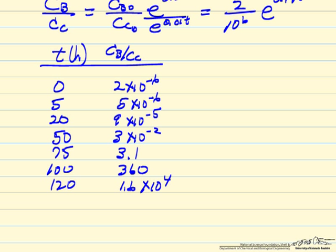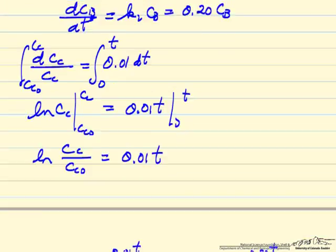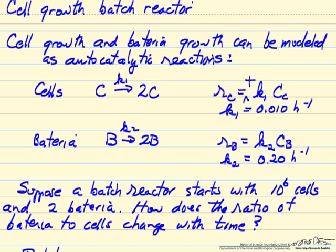So what started out as a very small fraction of bacteria now is the majority of species would be bacteria, and how long this reaction can go before we run out of nutrients is a function of what's in the system. But you can see the competition, the change in what's in the system between cells and bacteria depend very much on what these rate constants are.